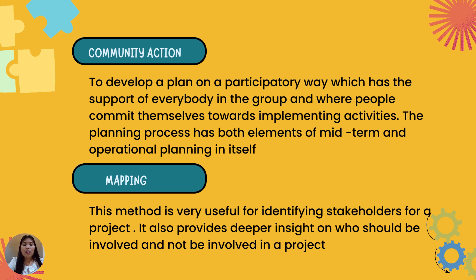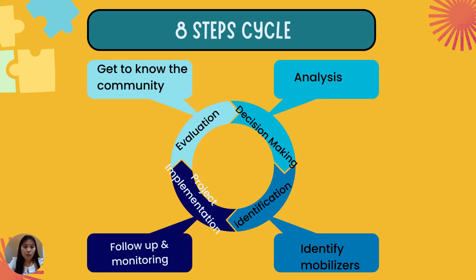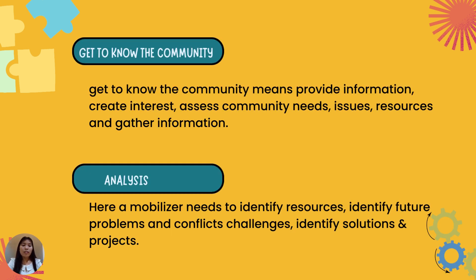To give us a clearer overview, our handbook gave us the eight-step cycle. Here are those eight steps: first, get into the community; analysis; decision making; identification; identify mobilizers or leaders; project implementation; follow-up and monitoring; and the last one is evaluation.